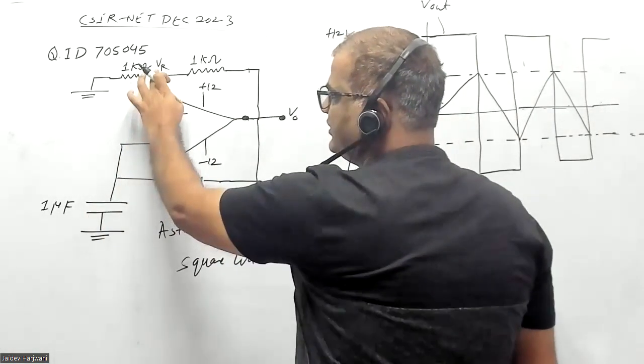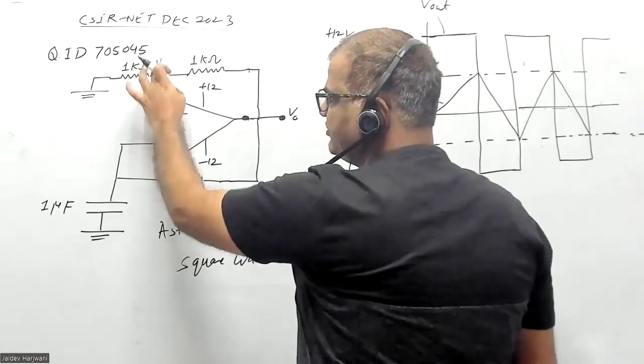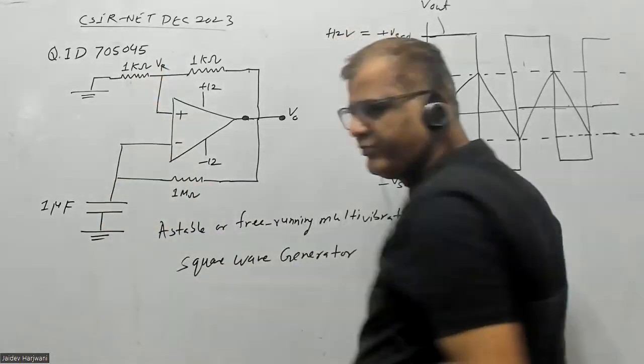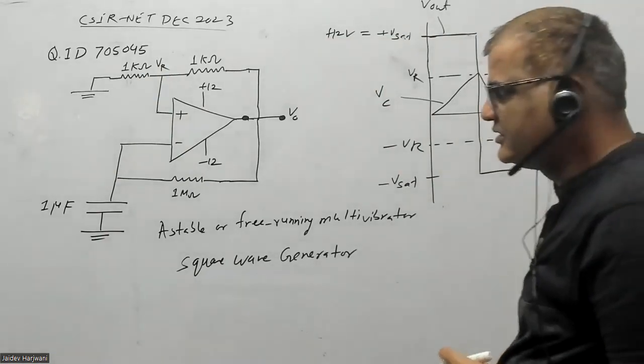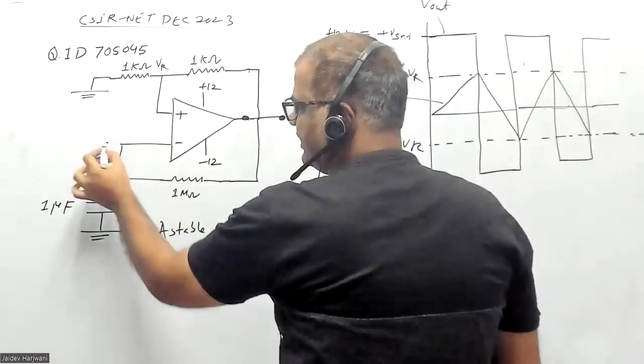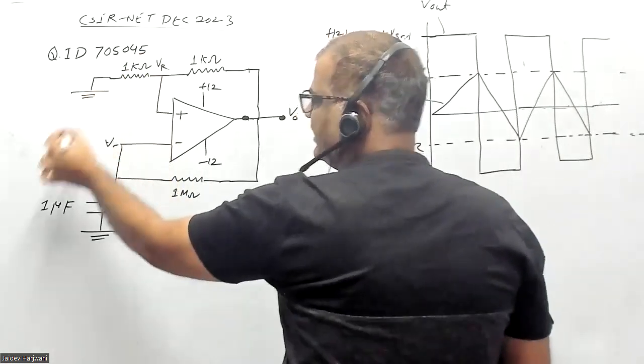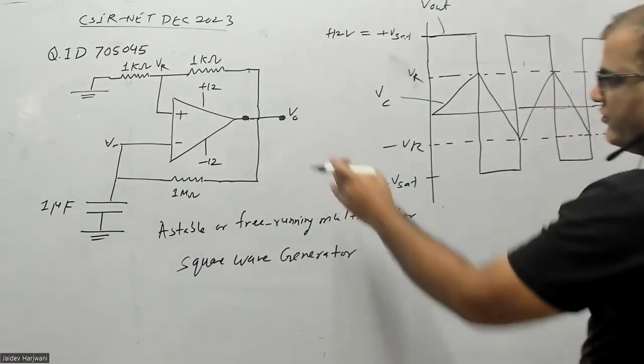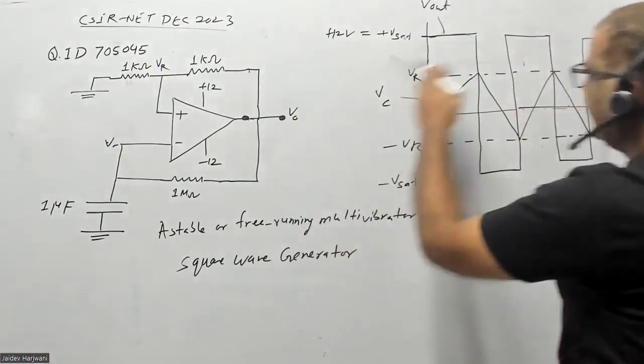Whenever the capacitor voltage becomes greater than this VR, or becomes equal to VR, at that point again transition will take place. Because now whenever this voltage is greater than VR, V minus becomes greater than VR, the difference becomes negative, and so the output will go to negative saturation.